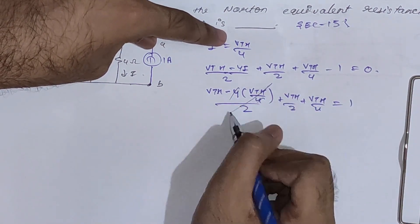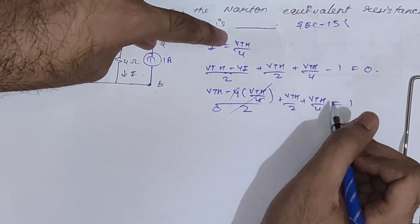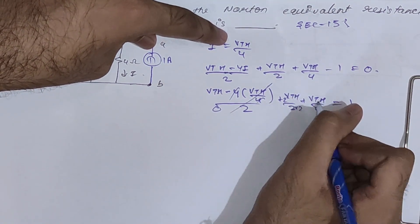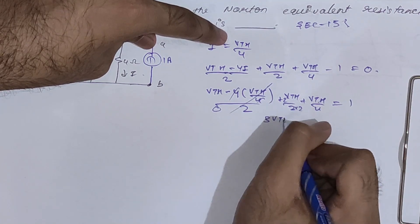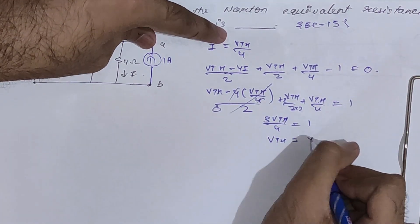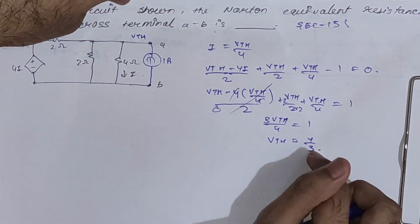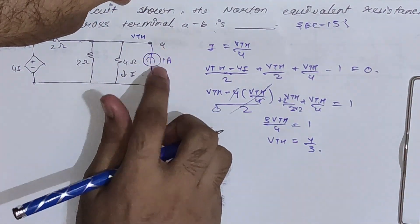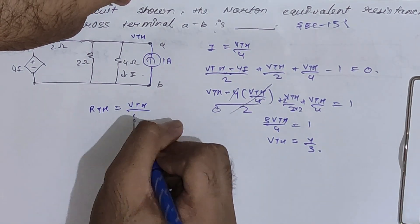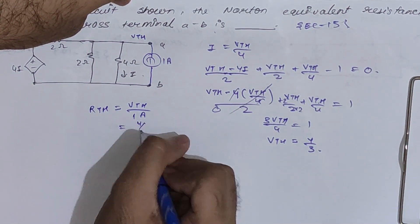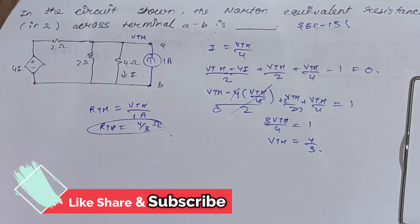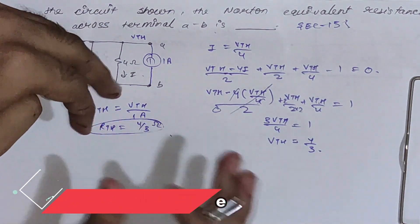Simplifying: 0 + Vth/2 + Vth/4 = 1, giving 3·Vth/4 = 1, so Vth = 4/3 V. Since 1 ampere was assumed, Rth = Vth / 1 A = 4/3 ohm. Following this condition, you can hit the answer directly without checking anything else.